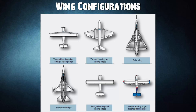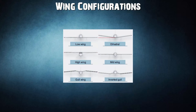Both the leading edge and the trailing edge of the wing may be straight or curved, or one edge may be straight and the other curved. One or both edges may be tapered so that the wing is narrower at the tip than at the root where it joins the fuselage. The wing tip may be square, rounded, or even pointed. Wings can be attached to the fuselage at the top, mid-fuselage, or at the bottom, and may extend perpendicular or angle up or down slightly. This angle is known as the wing dihedral, which affects the lateral stability of the aircraft.